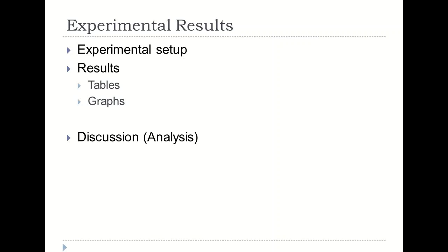In the discussion or analysis part, provide justification for why such results are obtained. Provide reasoning for why your approach is getting certain high values as presented in graphs and tables. If the value is relatively low on certain occasions, explain why, backing your results with reasoning for why your approach is performing as it does.